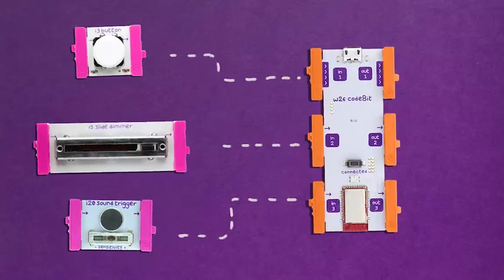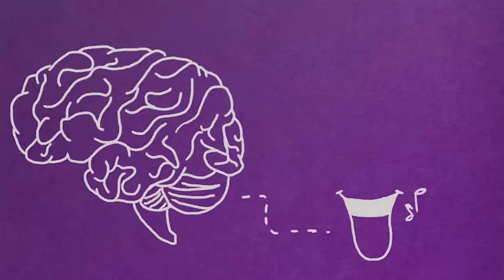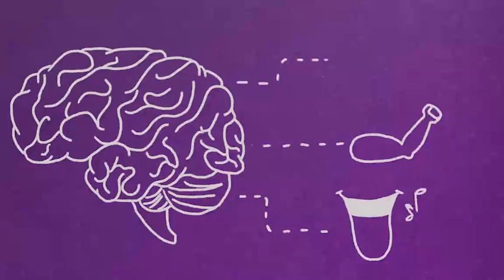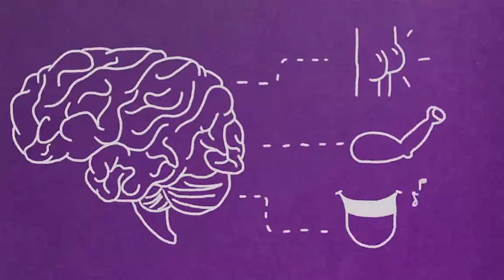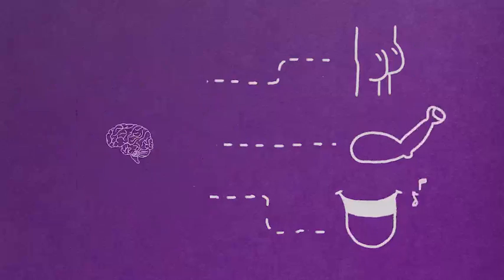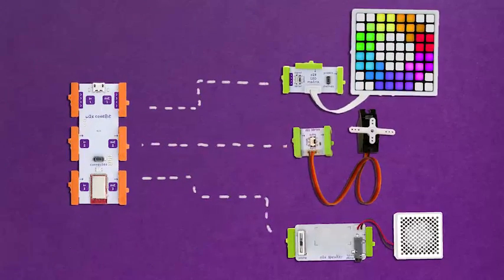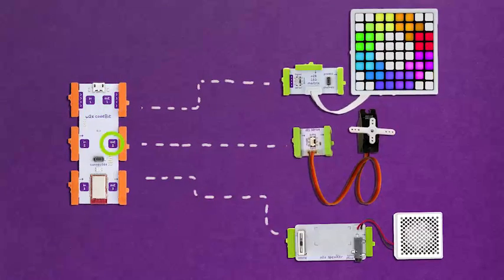Your brain sends signals through its outputs, making sound with your vocal cords and movement with your muscles. If we were like fireflies, we'd have light outputs too. Your code bit sends signals to other bits through its output bit snaps. These are labeled Out1, Out2, and Out3.